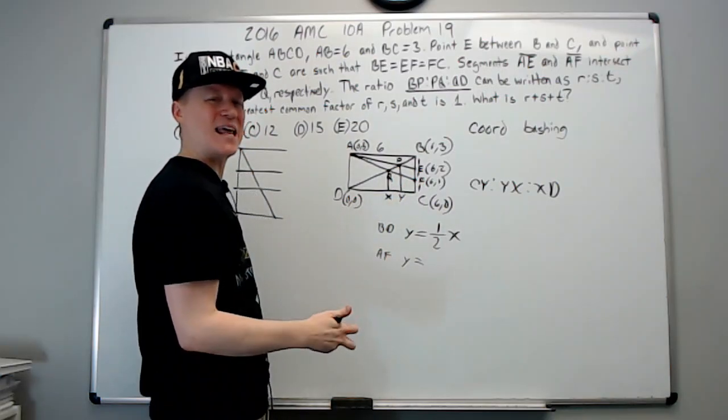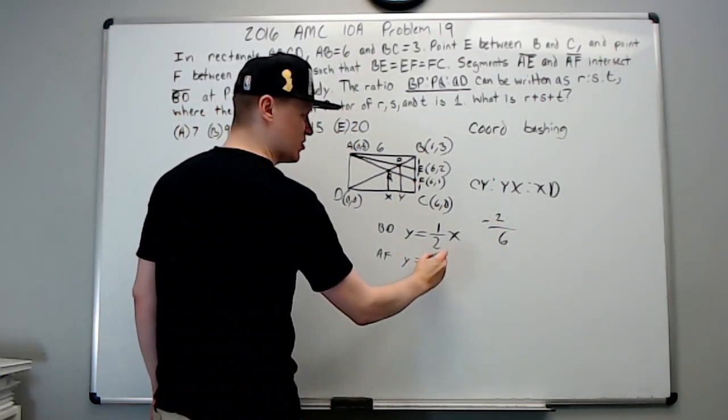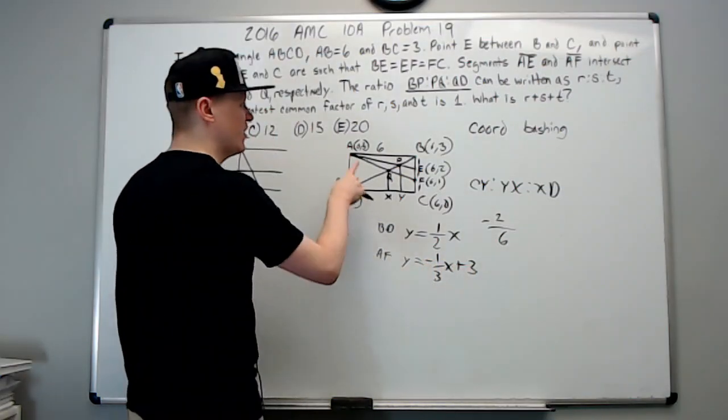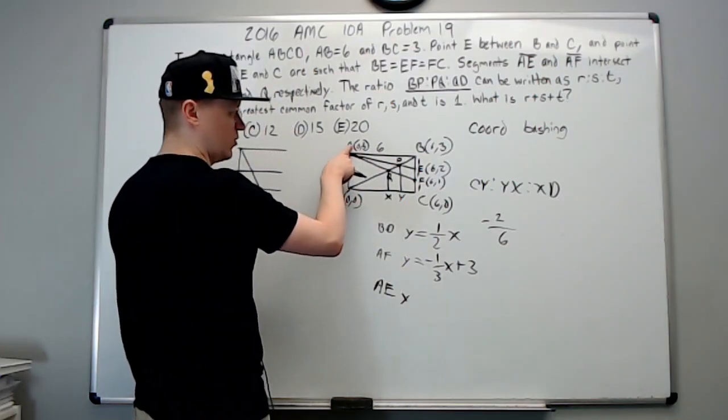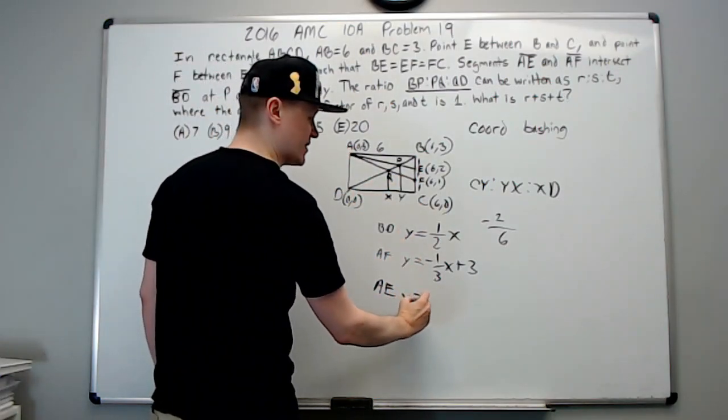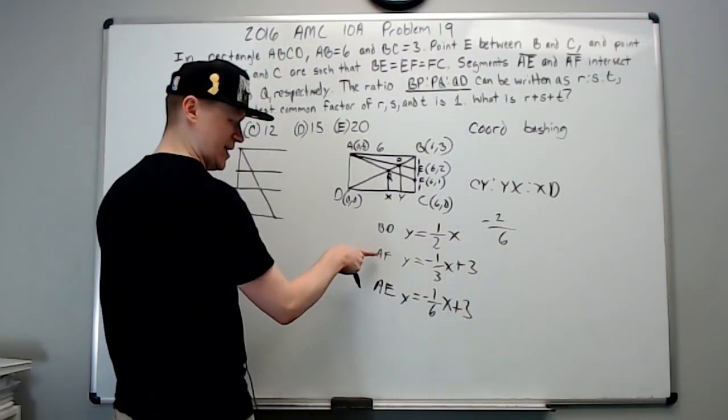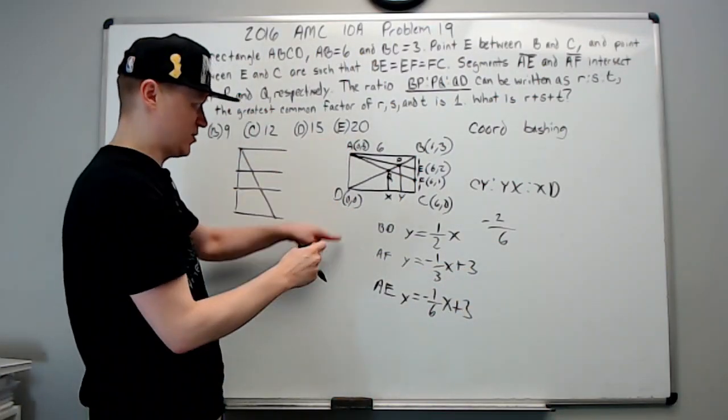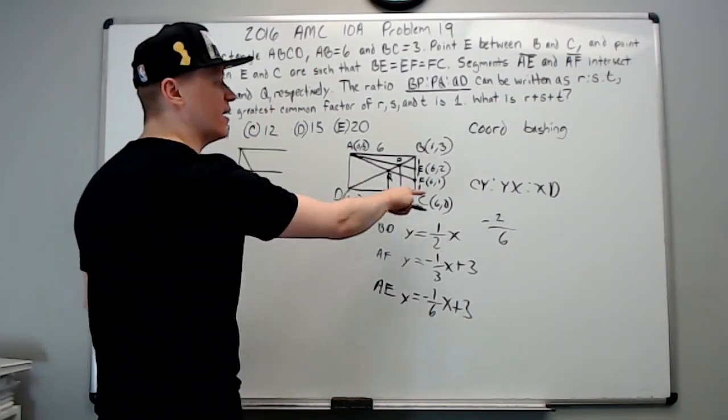What about AF's equation? We already know what it is in mx plus b form because that's B, zero three, right? And we know that you're going to go down two to get to here and over six, that's a negative one-third slope. You're going down two and right six, so negative one-third x plus three. Furthermore, AE can quickly be written as you're going down one and over six, so it's negative one-sixth x plus three, same y-intercept as AF because this is the y-axis in our coordinate plane that we're imagining is here.